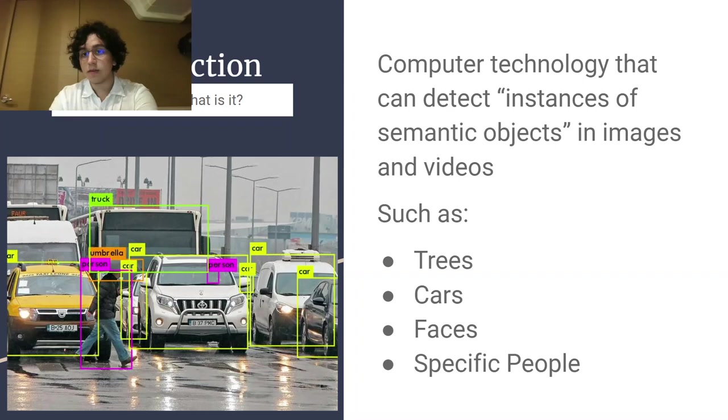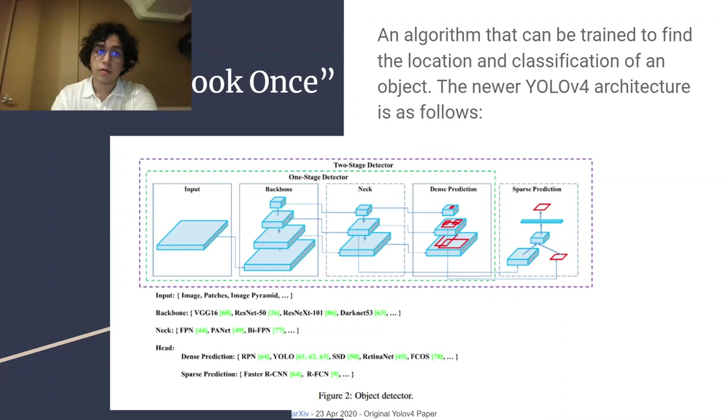Computer technology that can detect instances of semantic objects in images and videos are using object detection. These semantic objects might be anything from trees to cars to human faces to specific people like celebrities. YOLO, standing for you only look once, is an algorithm that can be trained to find the location and classification of an object.